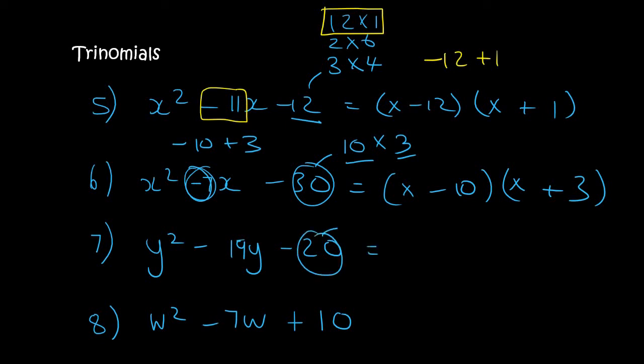Now we look at the number 20 which is 5 times 4 or 20 times 1. Straight away 20 and 1 can make 19 by saying minus 20 plus 1. So we open up two brackets and we say y and y, then minus 20 and plus 1.